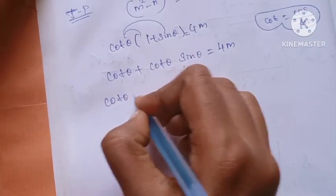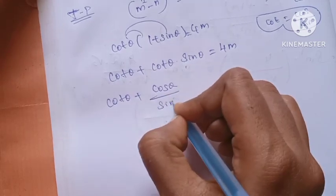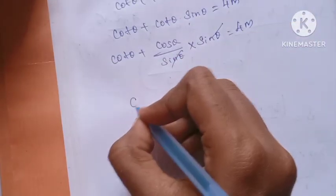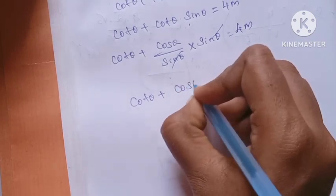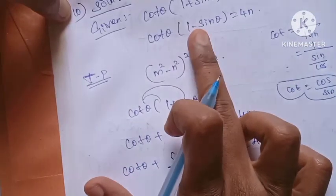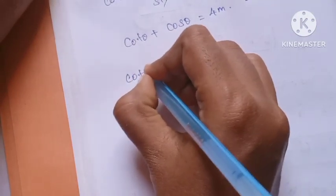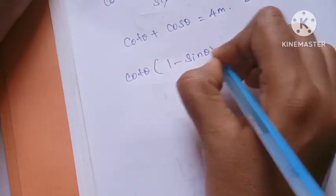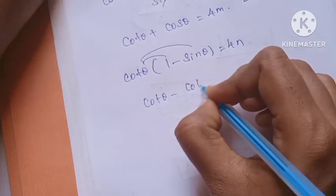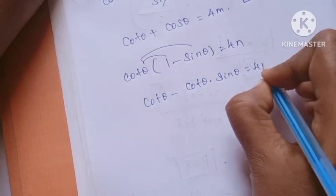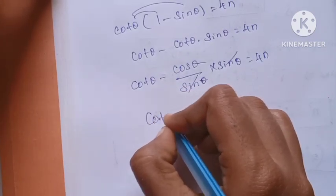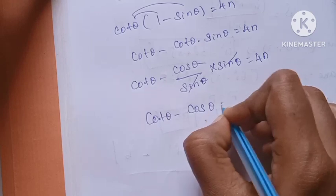If you understand, the value of cos theta by sin theta, into sin theta — sin cancels. We know cos theta plus cos theta is equal to 4. This is equation 1. Now, cos theta into 1 minus sin theta is equal to 4n. So cos theta minus cos theta into sin theta is equal to 4n. Sin cancels, so cos theta is equal to 4n. This is equation 2.